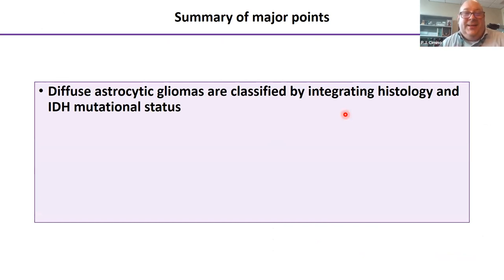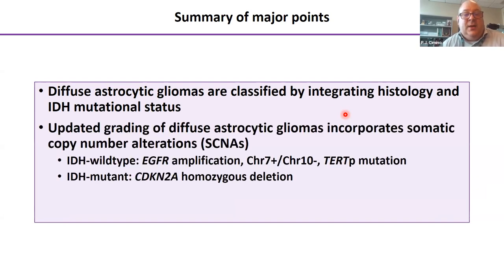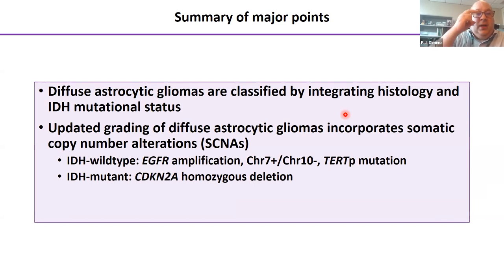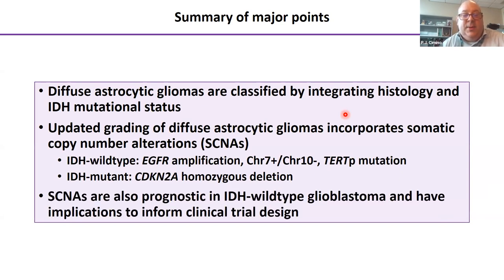In summary: diffuse astrocytic gliomas are classified by integrating histology and IDH mutational status. Updated grading incorporates somatic copy number alterations — for histologically grade 2 or 3 IDH wild type tumors, EGFR amplification, gain of whole chromosome 7, loss of chromosome 10, or TERT promoter mutation upgrade to grade 4; for IDH mutant tumors, CDKN2A homozygous deletion upgrades to grade 4. Somatic copy number alterations are also prognostic in IDH wild type glioblastoma and have implications for informing clinical trial design.